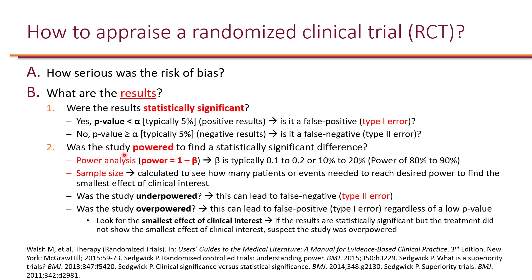When it comes to power, we look at beta. Beta is typically set between 10 to 20%, which results in a power of 80 to 90%. We use the equation: power equals 1 minus beta. We are interested in power because we use it to calculate sample size. For example, in order to have 80% power, you can calculate how many patients are needed in the study. Sometimes instead of number of patients, they look at the number of events.